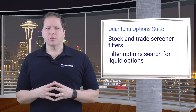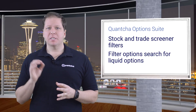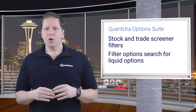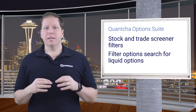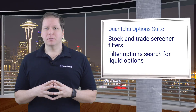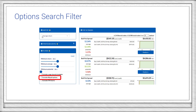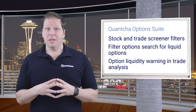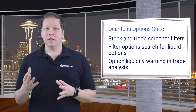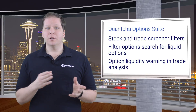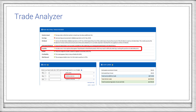If you're using our option search to find a trade based on a specific underlying and expiration, we provide a filter to exclude trades that involve illiquid options. This makes sure that you only see trades where all options meet our option liquidity filter. If you happen to be analyzing a trade with at least one illiquid option, we will let you know in the analyzer — one of the legs is outside of our liquidity filter, so we provide a warning right at the top.